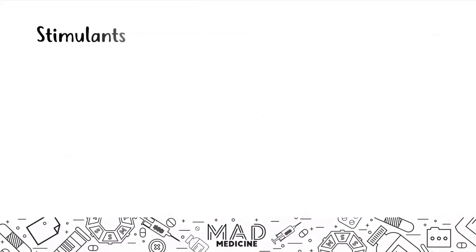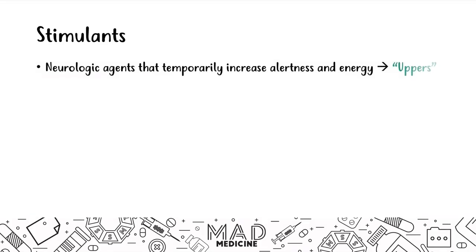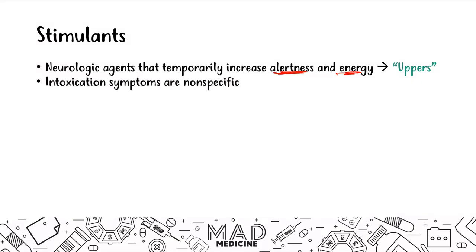Let's start talking about stimulants. Stimulants are neurologic agents that temporarily increase our alertness and energy. On the street, they're often called uppers. Downers are depressants, uppers are stimulants. The intoxicating effects of stimulants are very nonspecific — you're not going to be able to figure out if someone's been taking a stimulant or a downer simply based off their effect. You need surrounding information and some physical findings as well.